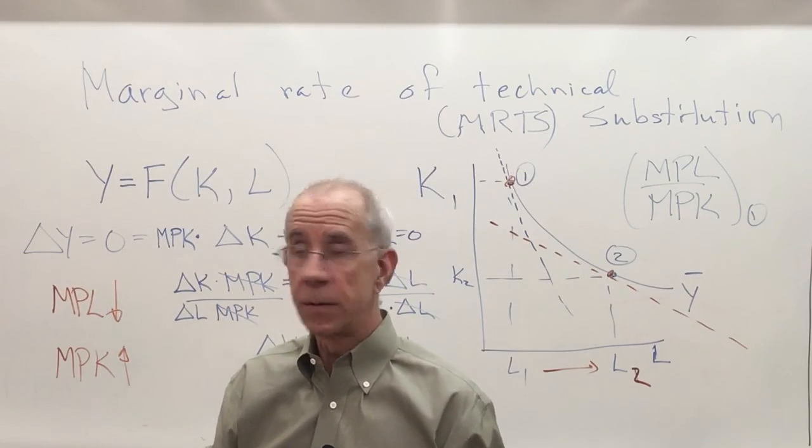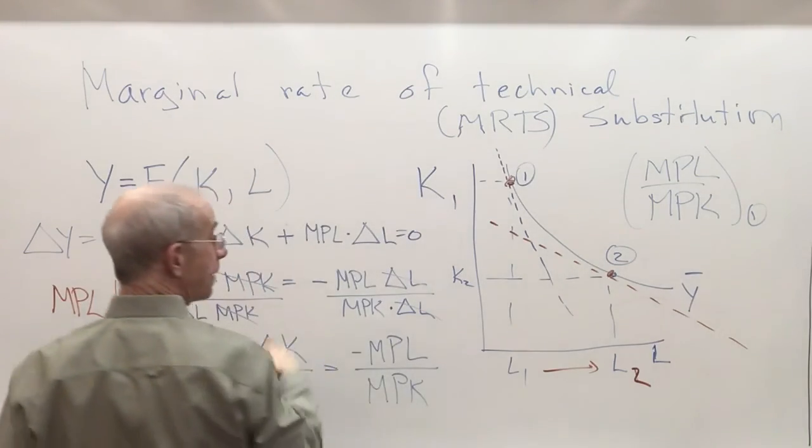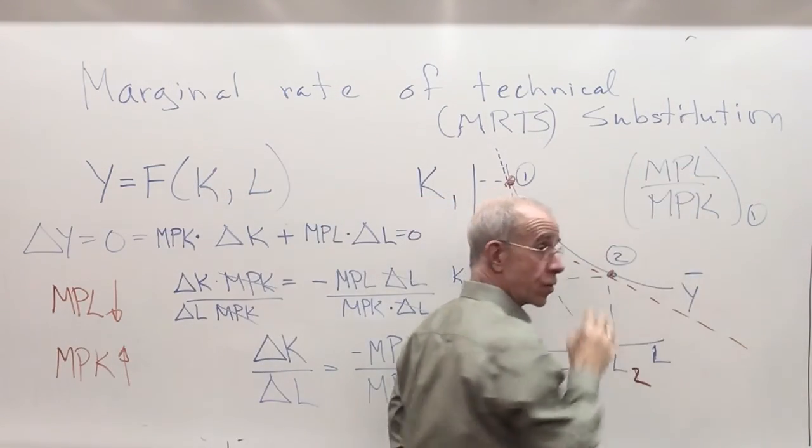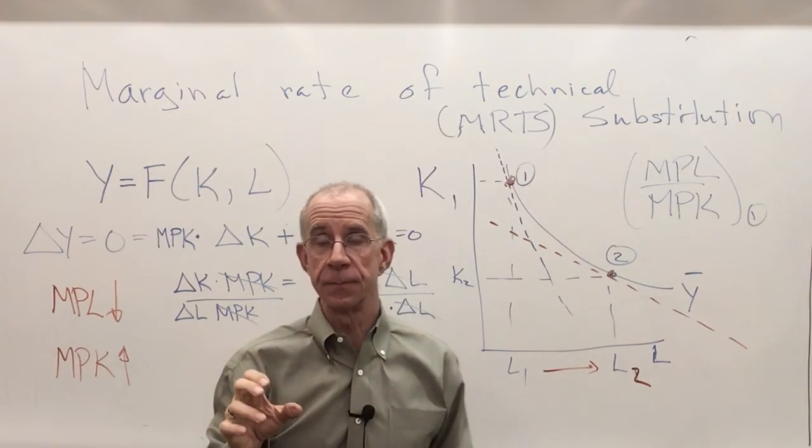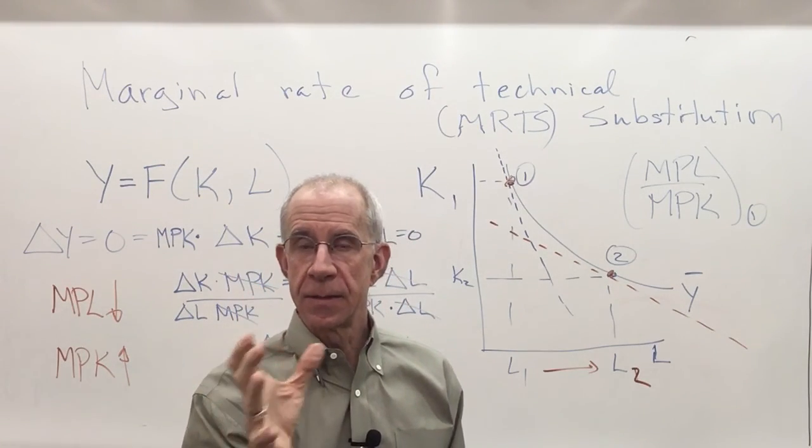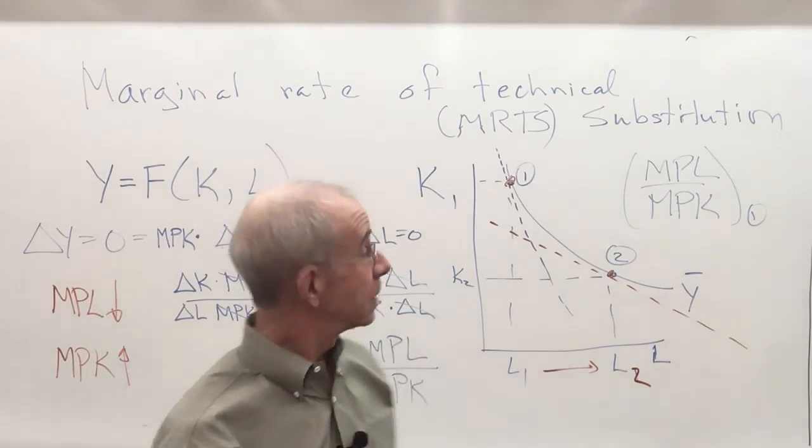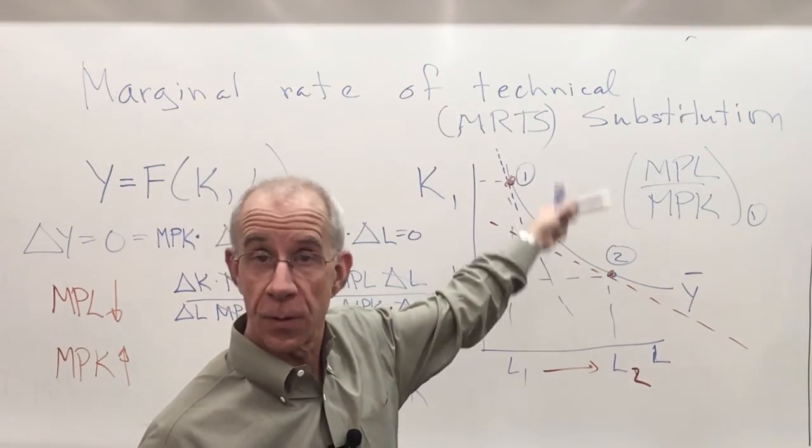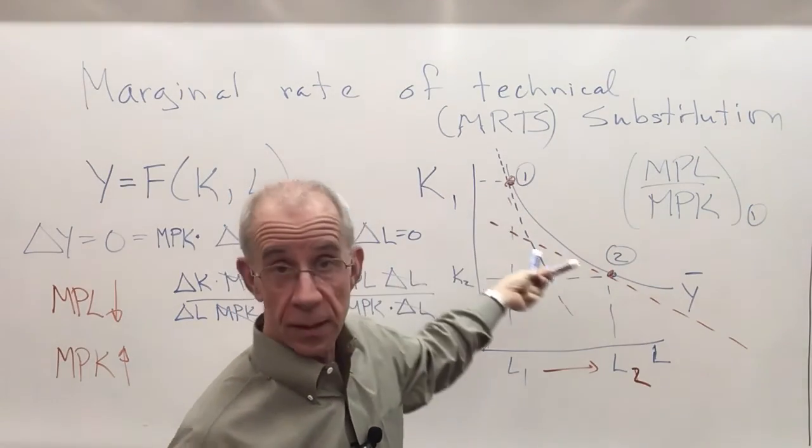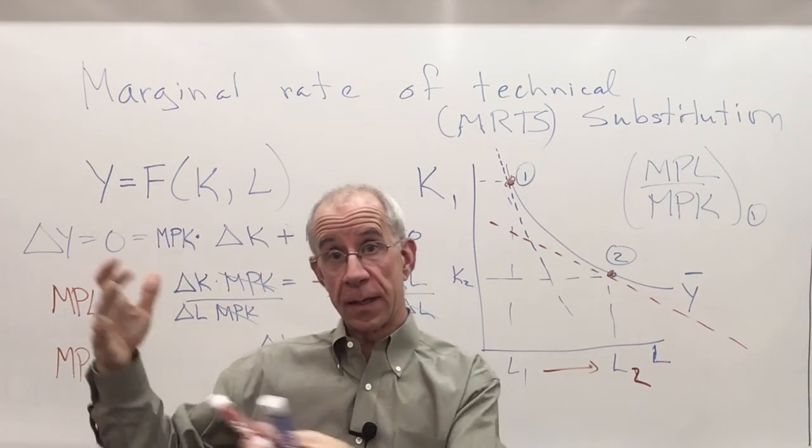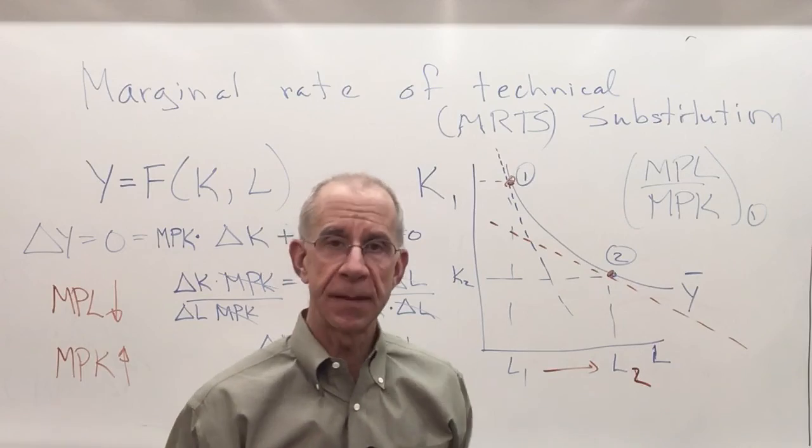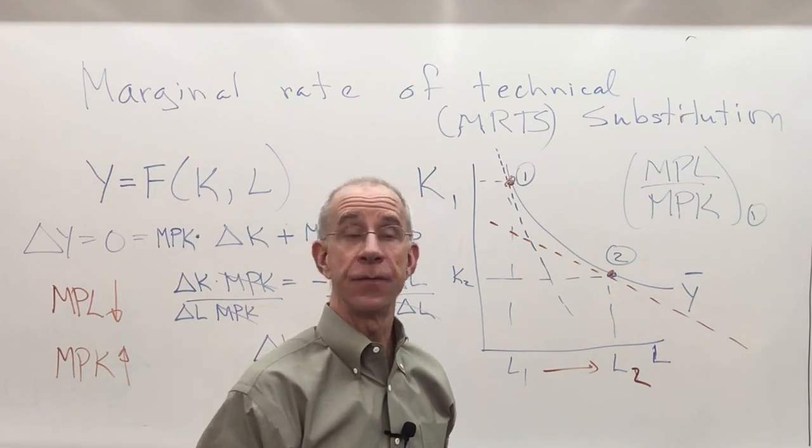Now we will use this idea about the slope of the isoquant equal to the relative marginal productivity of labor and capital to analyze the optimal choice of labor and capital. Because ultimately these productivities, how much extra output I get by using labor and capital is going to be related to how much it costs to hire them. But that is the subject of a different video.